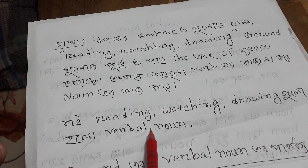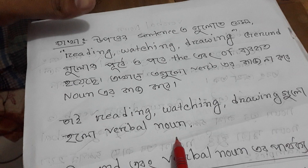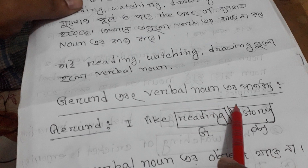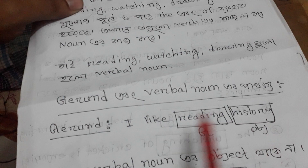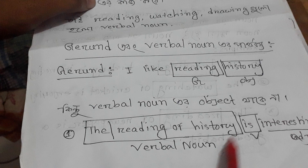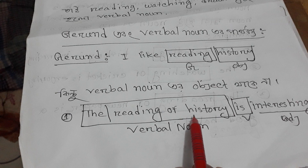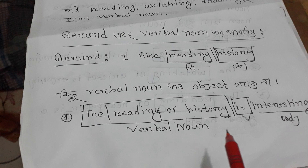Reading, watching, and drawing are part of the verbals. When we use a gerund, we say: I like reading history — gerund object. But if you have a verbal noun object, you say: The reading of history is interesting. The gerund object is interesting.